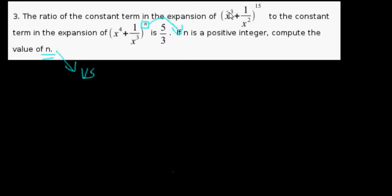What the constant term means is there's no variable attached, and that happens when all the x's cancel out. This is possible because this is a positive exponent and this is a negative exponent, and at a certain point they're going to be able to equal zero.